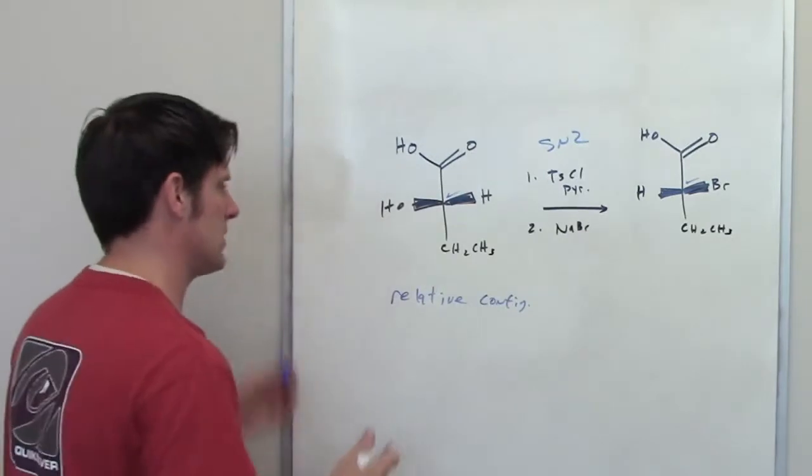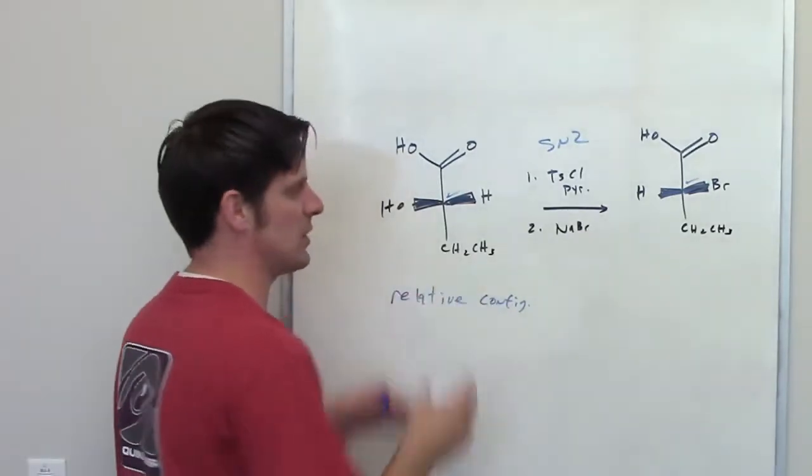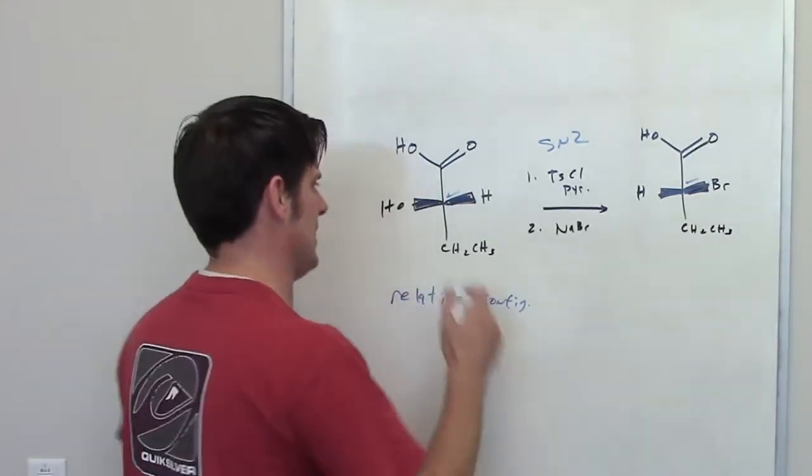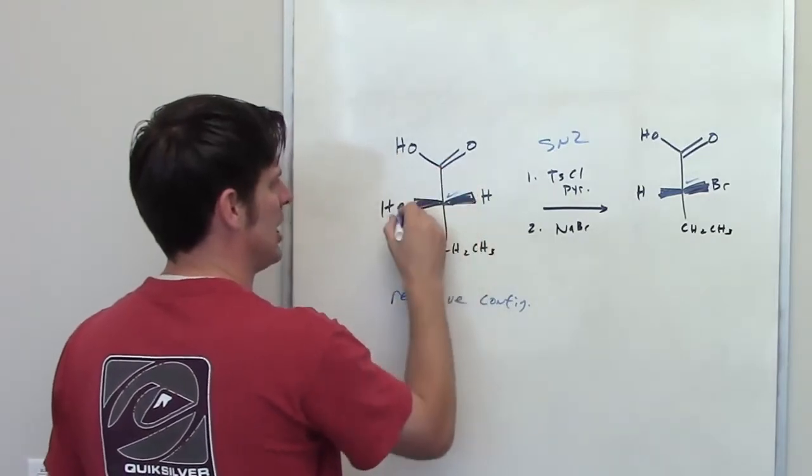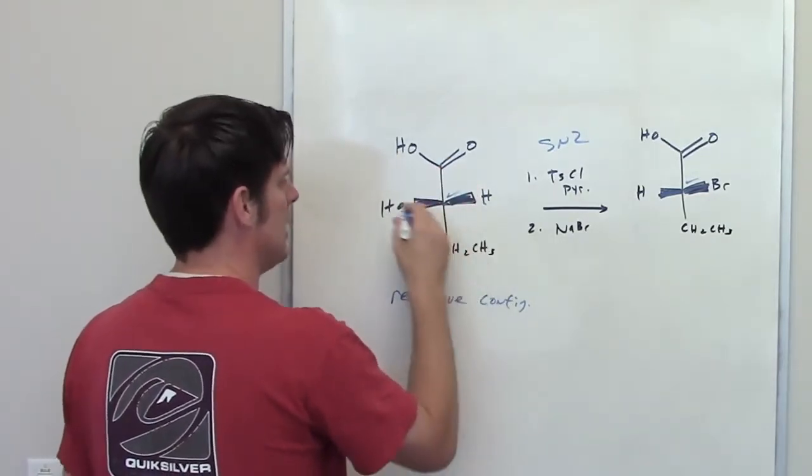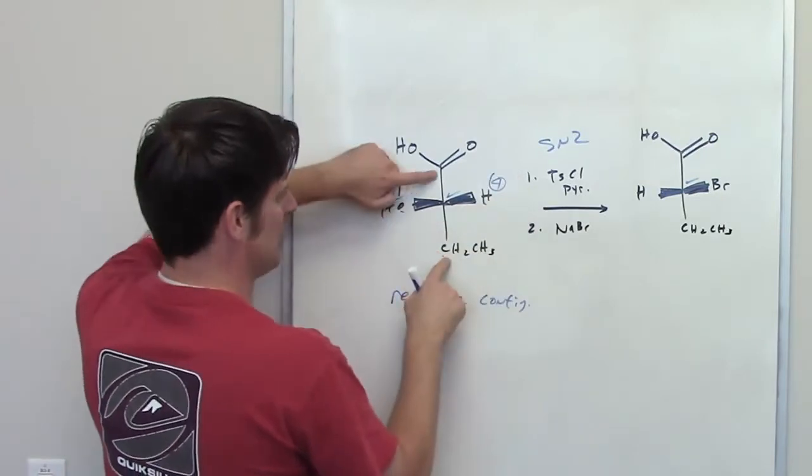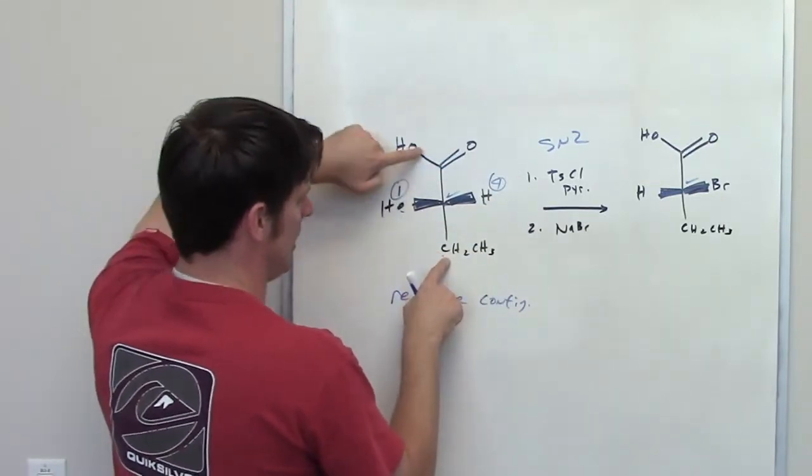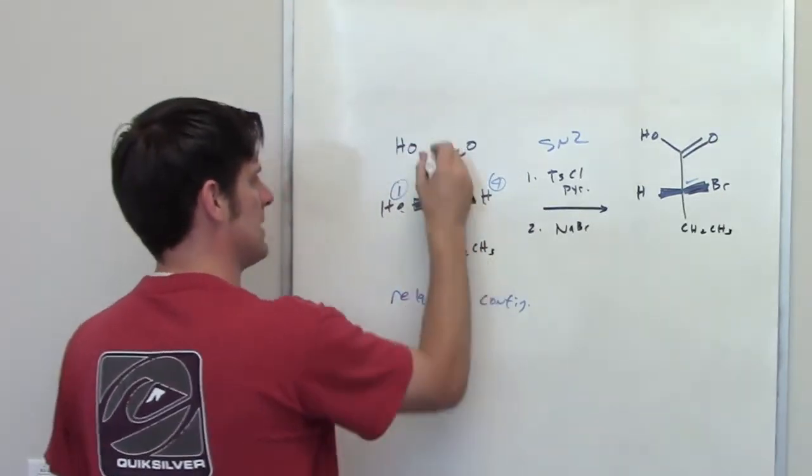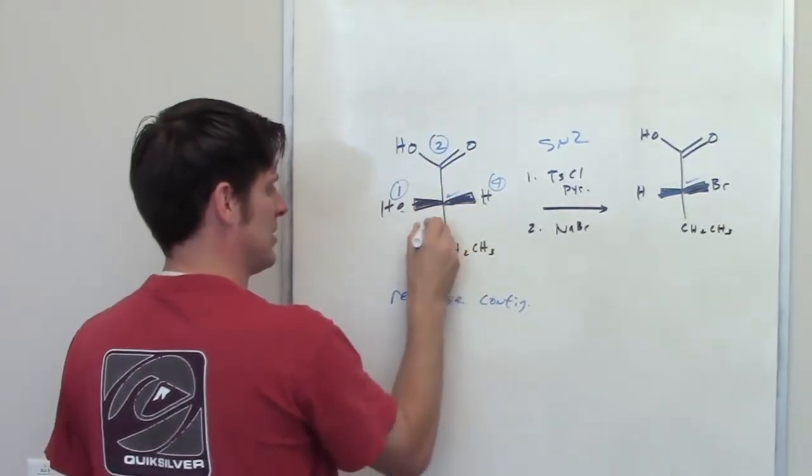What else can we see about this? Well, let's take a look and determine if each of these stereocenters is R or S. This stereocenter's bound to a carbon, an oxygen, hydrogen, and a carbon. Oxygen wins. Hydrogen loses. I've got carbon-carbon tie. This carbon's bound to a bunch of oxygens. This is bonded to another carbon, which means that this group up here is number two. This group down here is number three.